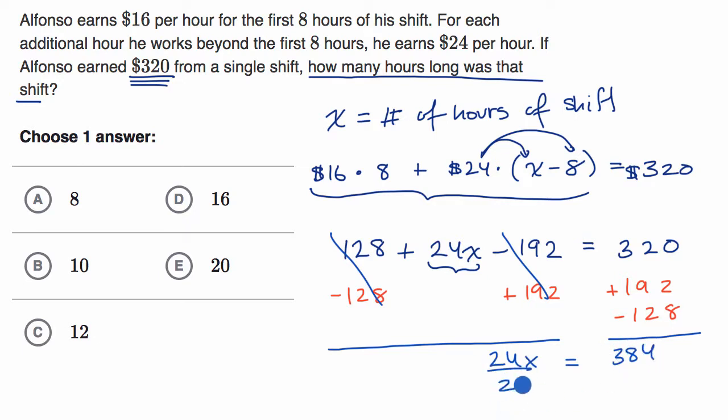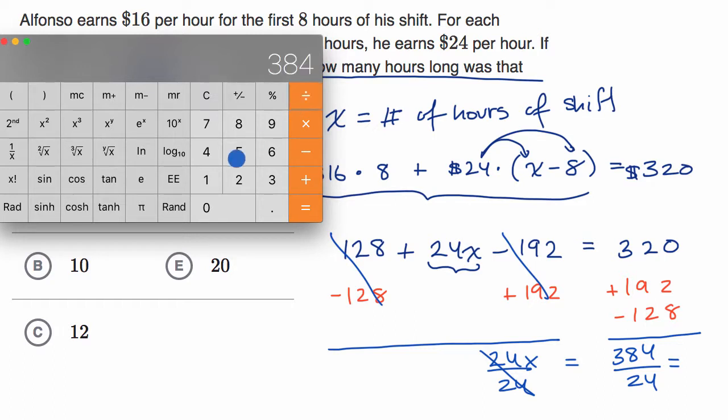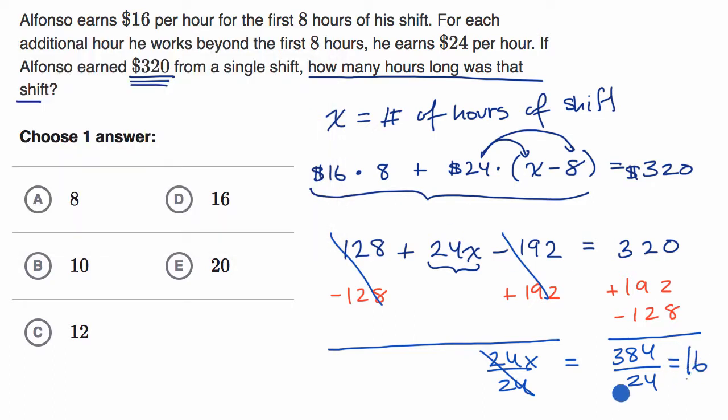Now to solve for X, you just divide both sides by 24. And we get X is equal to, I'll just get the calculator out again. Just take that and divide by 24. We get 16. X is equal to 16, which is that choice right over there.